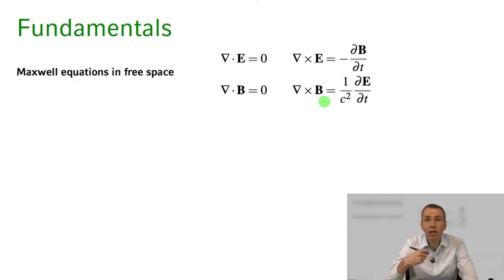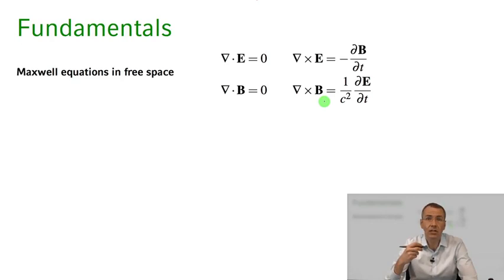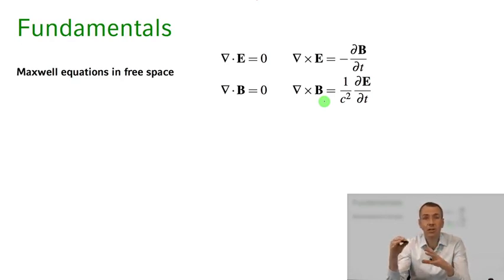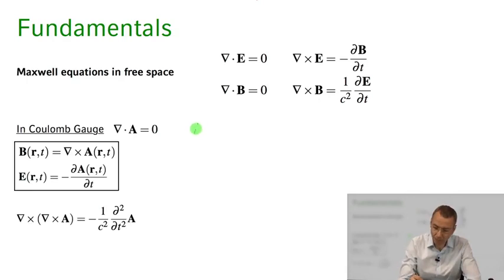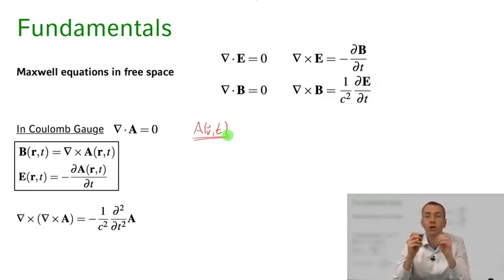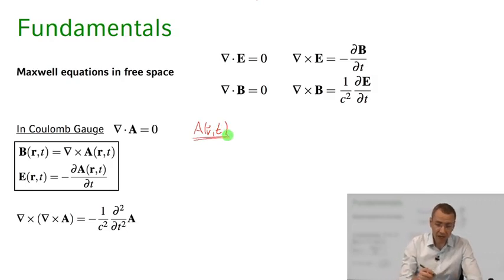Usually we can rewrite Maxwell's equations in terms of the potentials — the scalar potential phi and the vector potential A. But if we choose the so-called Coulomb gauge, then we can describe the E field and B field purely through a vector potential A(r, t). In this Coulomb gauge, the divergence of A equals zero.